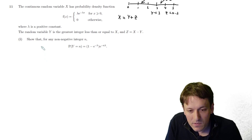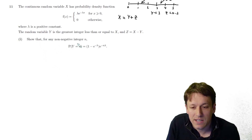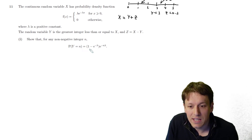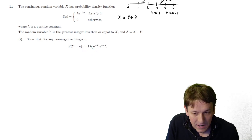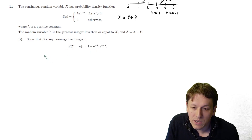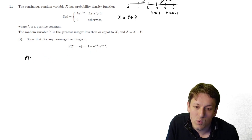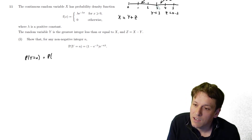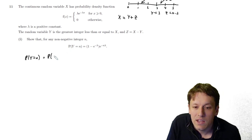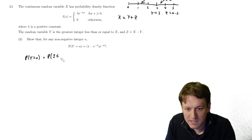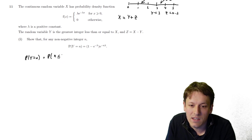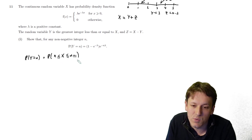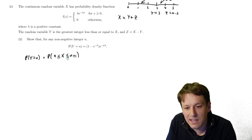This question is about splitting X into its integer part and what's left over. Part one asks us to show that for any non-negative integer n, the probability that Y = n is given by a specific formula. We work in terms of X: P(Y = n) is the same as P(n ≤ X < n+1), because if Y = 2, for example, X lies anywhere between 2 and 3.